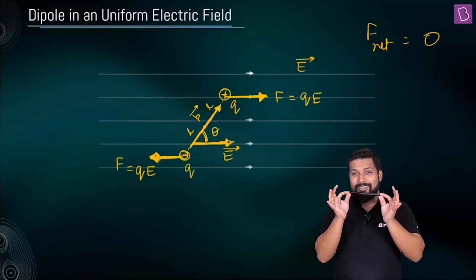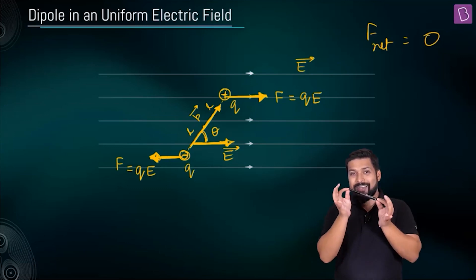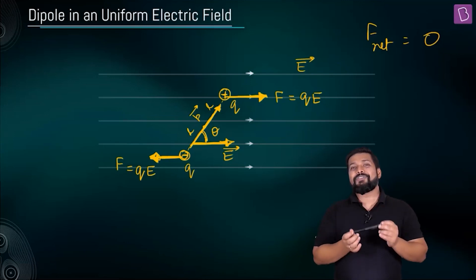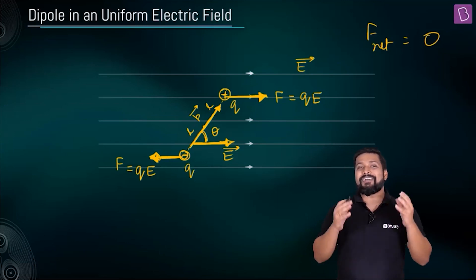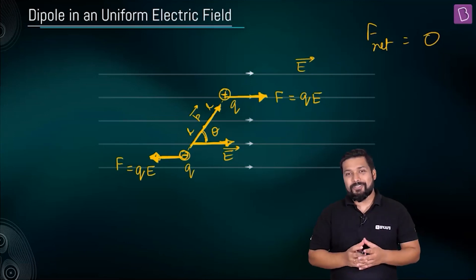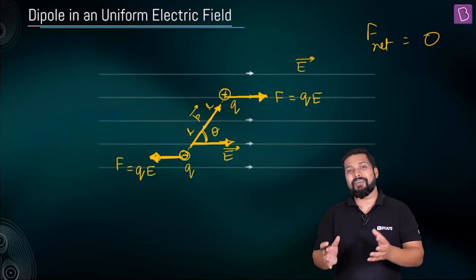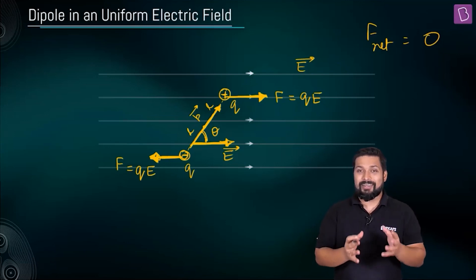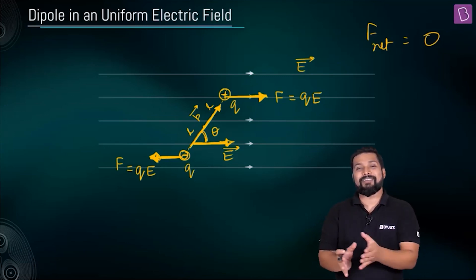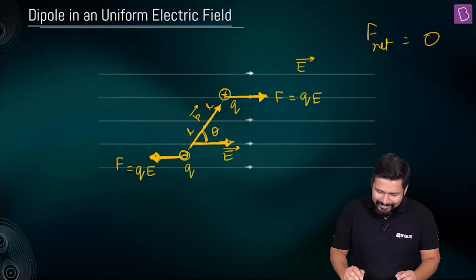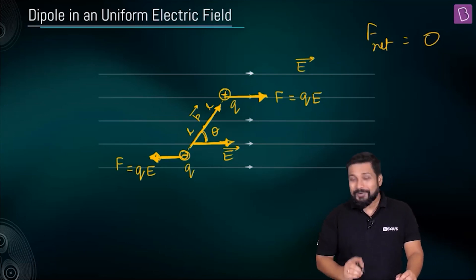Two equal and opposite forces whose line of action is not the same — if there are two equal and opposite forces whose line of action is not the same, that is going to develop a couple, and the couple will give us a torque. So that is going to be the story.